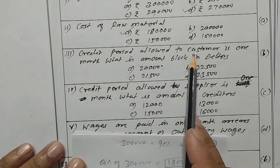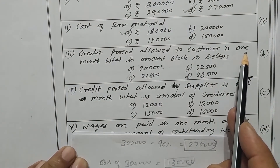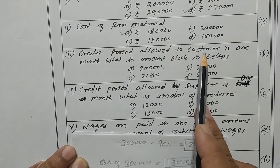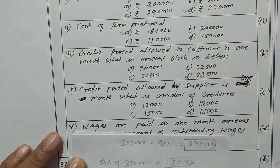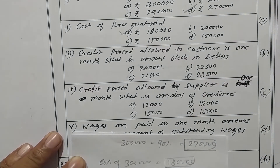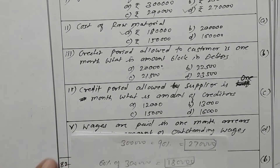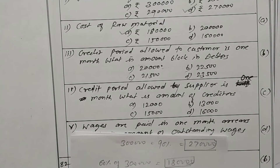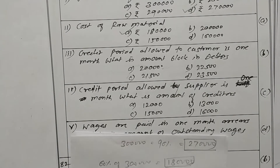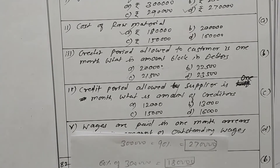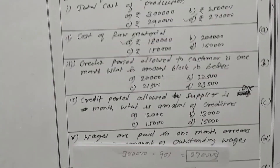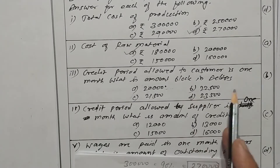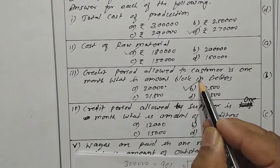Credit period allowed to customer is one month. For debtors we take total cost of rupees 2,70,000 divided by 12 into 1 month, giving rupees 22,500. Option B is the correct one.